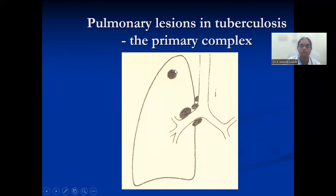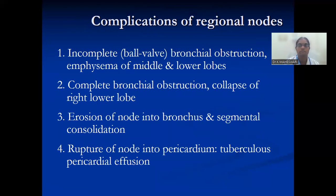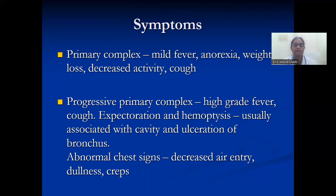The upper healed focus is called Simon's focus. Symptoms of primary complex include fever, anorexia, weight loss, decreased activity, and cough. In progressive primary TB, there can be high fever, cough, expectoration, and hemoptysis. Abnormal chest signs include decreased air entry, dullness, and crepitations.